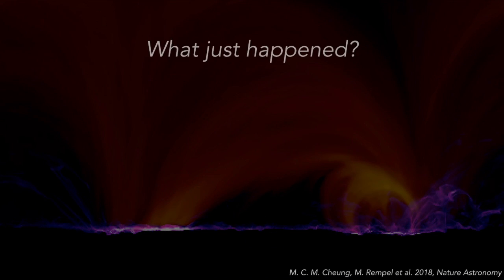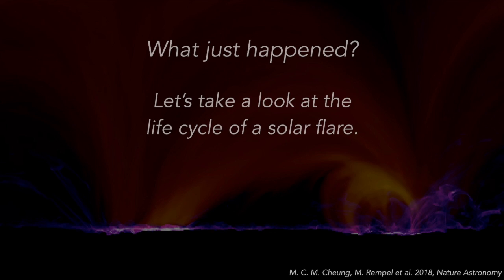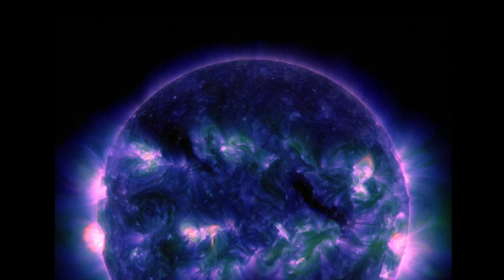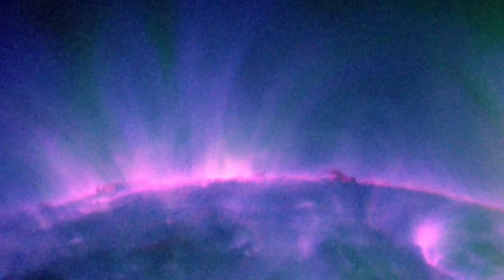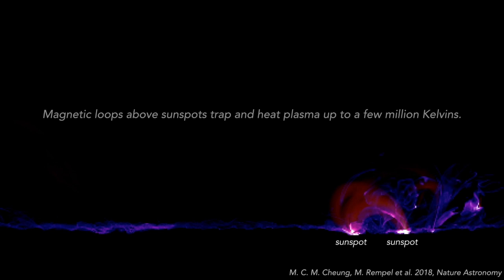What just happened? Let's take a look at the life cycle of a solar flare. This is our sun. Magnetic loops above sunspots trap and heat plasma up to a few million Kelvins.